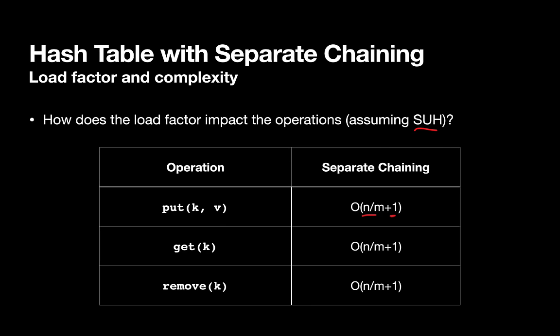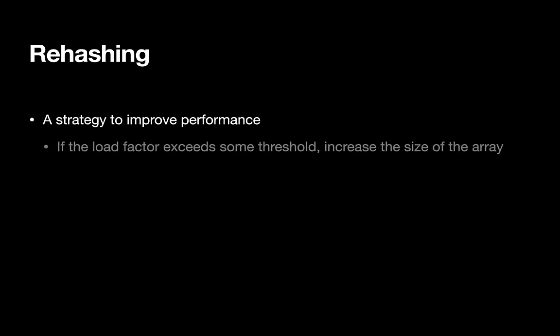So this seems less than ideal. If our load factor starts to get too high, our performance is going to degrade, and eventually, in the worst case, we fall back to the performance of our unordered list. So this takes us to our final topic here, the concept of rehashing, something we can do to avoid this degrading time complexity. Rehashing is just a strategy to improve performance. The basic idea is you monitor the load factor, and if it exceeds some threshold, you increase the size of the array.